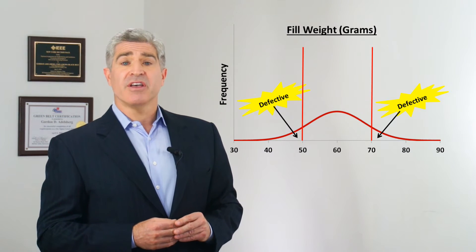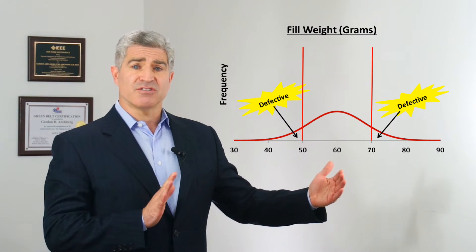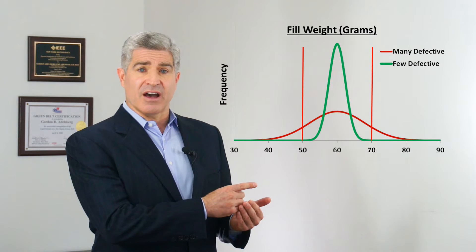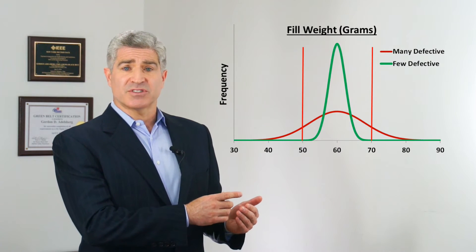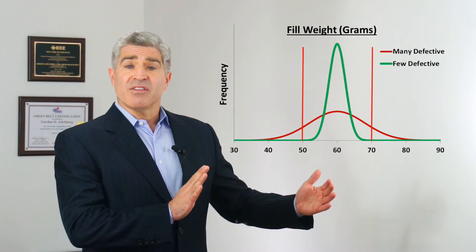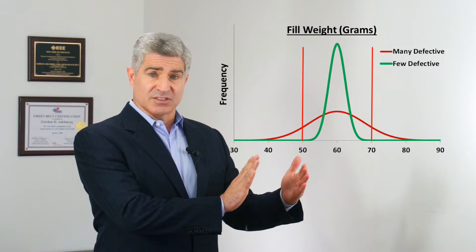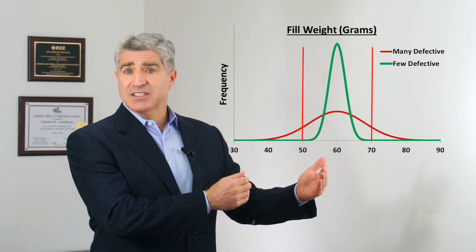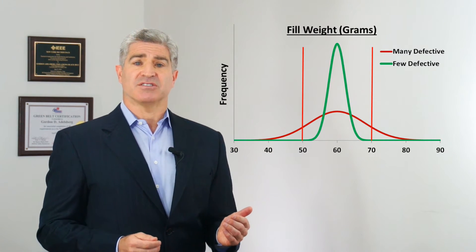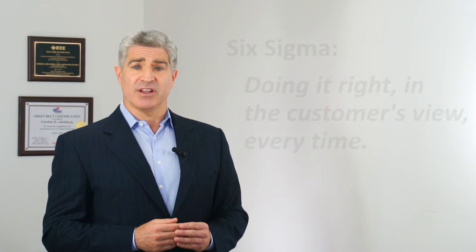In Six Sigma you employ several statistical tools and some process improvement tools. You'll squeeze that variability down. Look at what you got now — more than 99% are within specification. You're running Six Sigma. You can also start squeezing in these limits: go 55 and 65, running even tighter specifications and making your customers even happier.